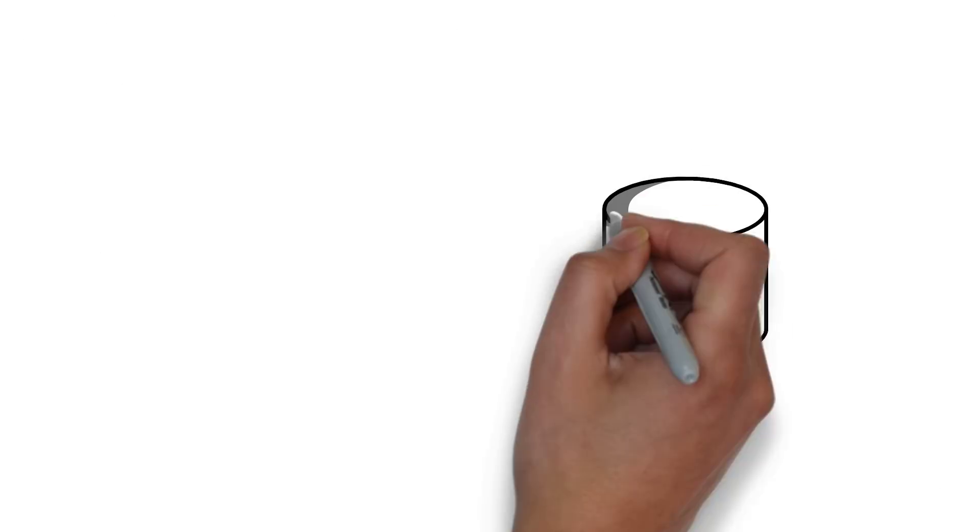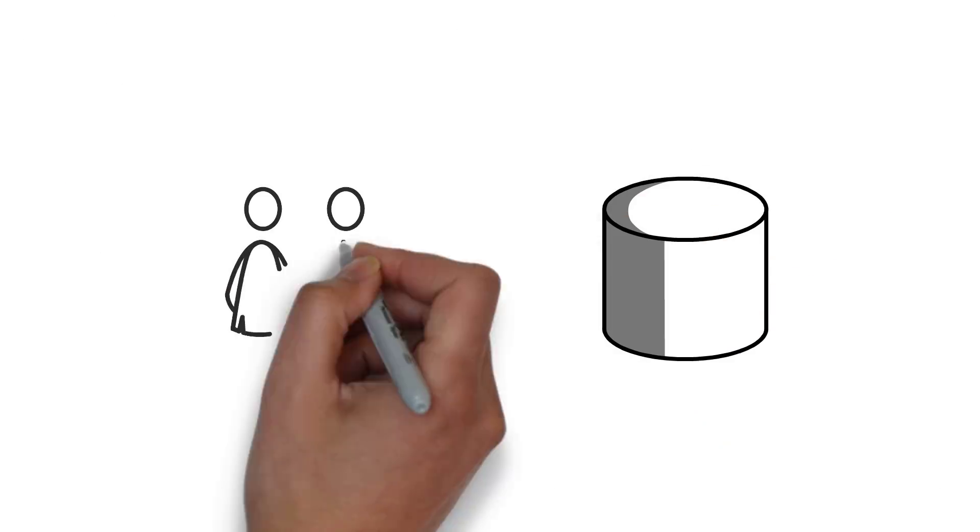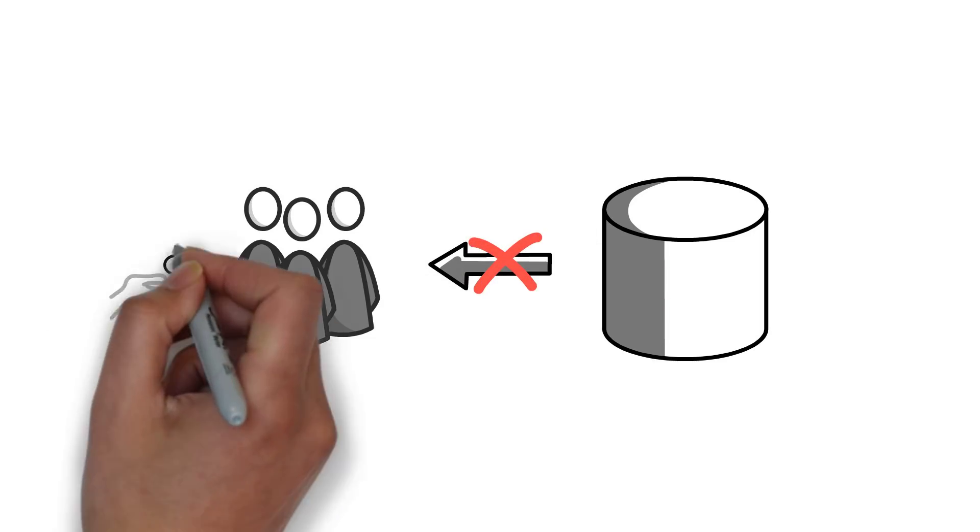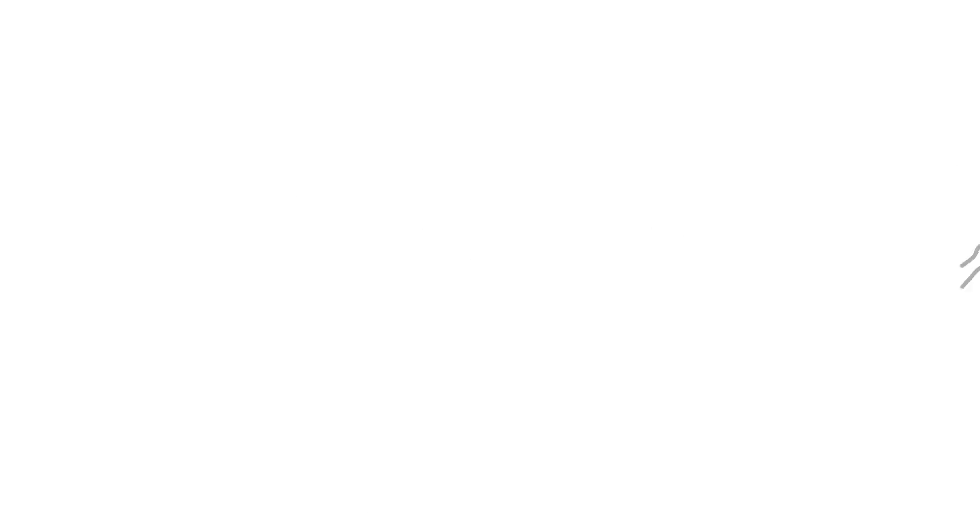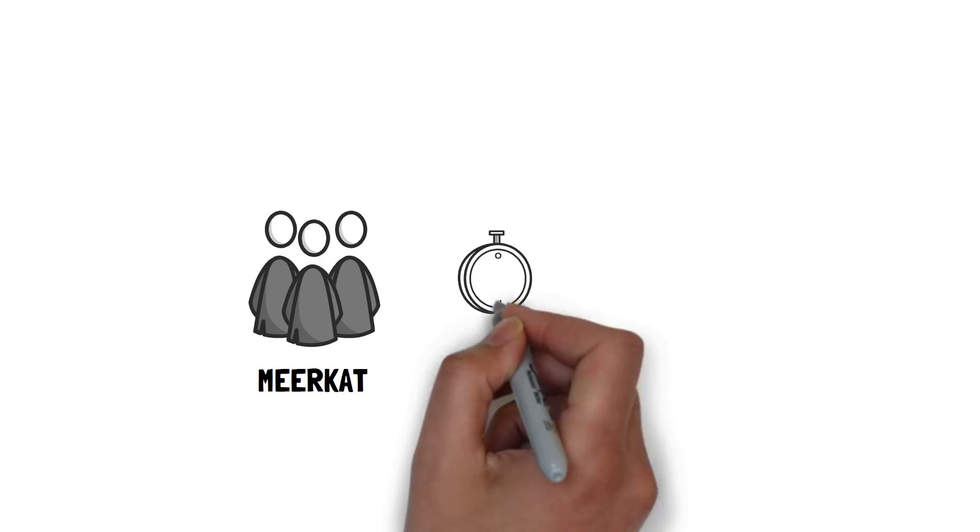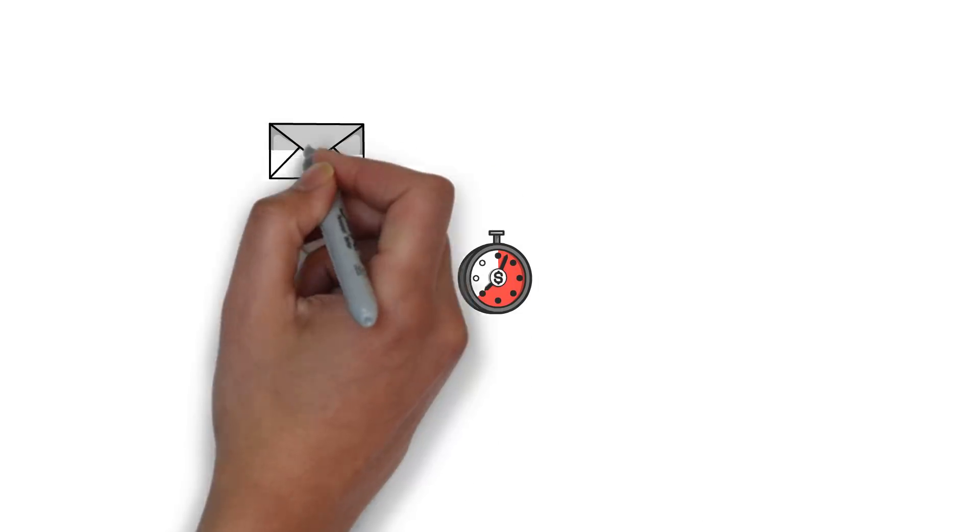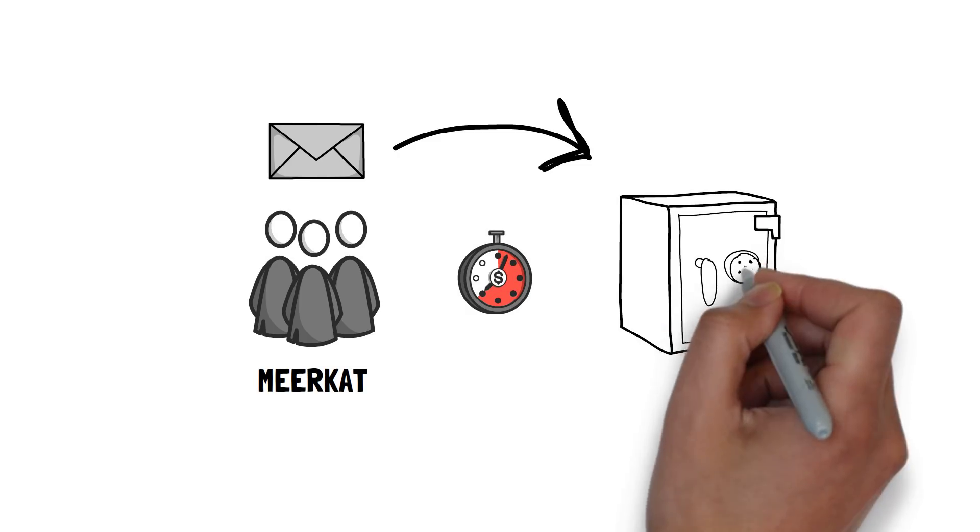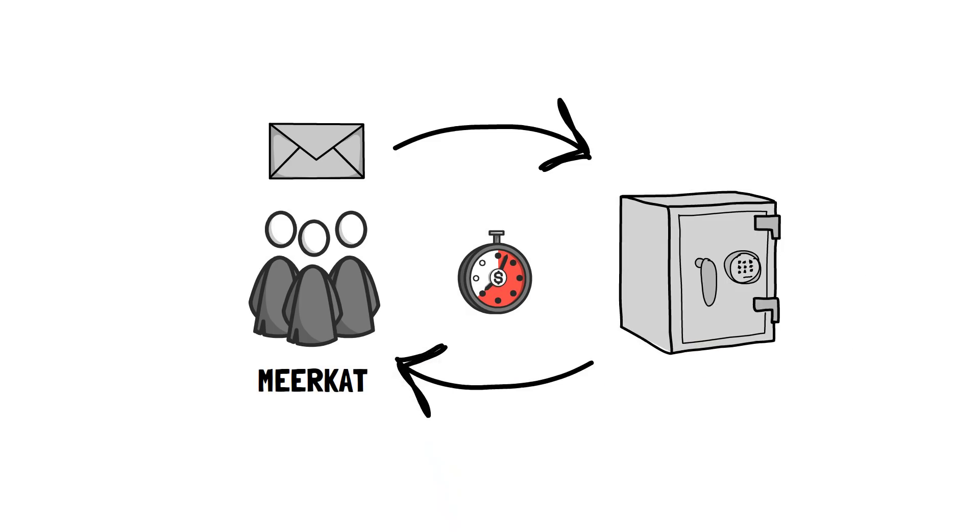If a large liquidity pool is used within a project, then the project team should not have the ability to retrieve these assets. If they do, then you are placing your trust in the project team. Initially, Meerkat Finance did not have this ability, however, shortly before the attack, the Meerkat Finance Deployer upgraded two of their vaults, giving themselves the ultimate backdoor into the vaults.